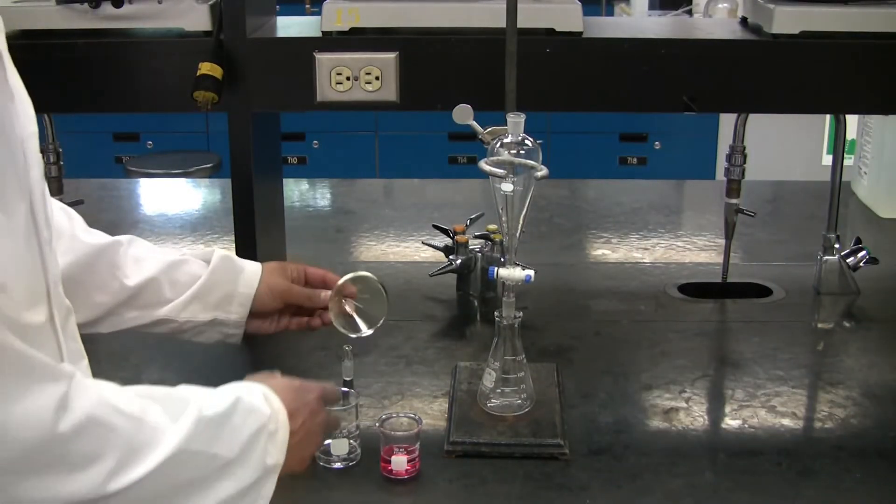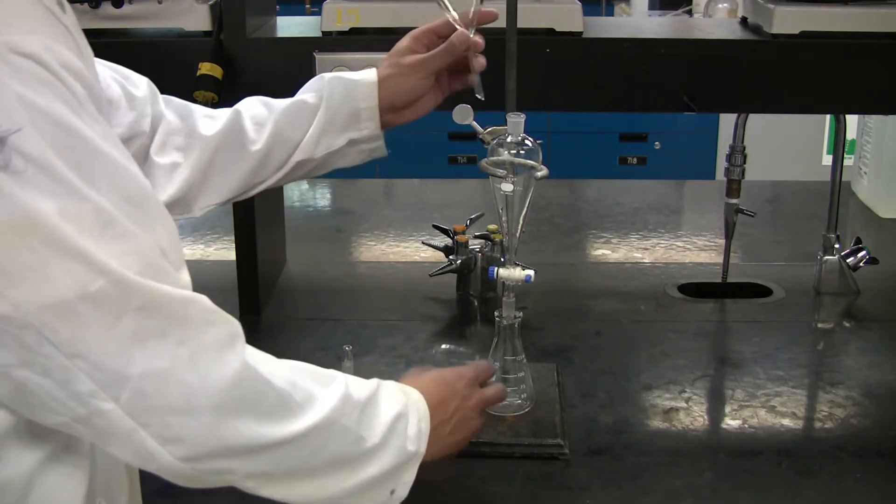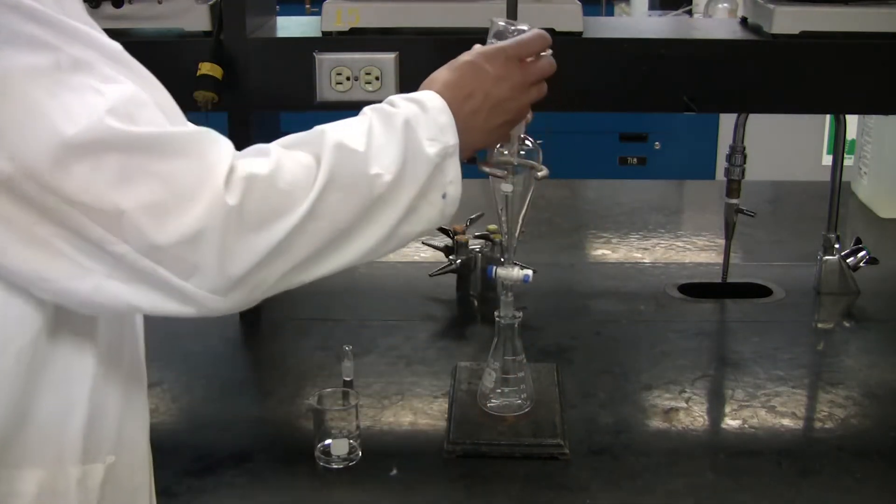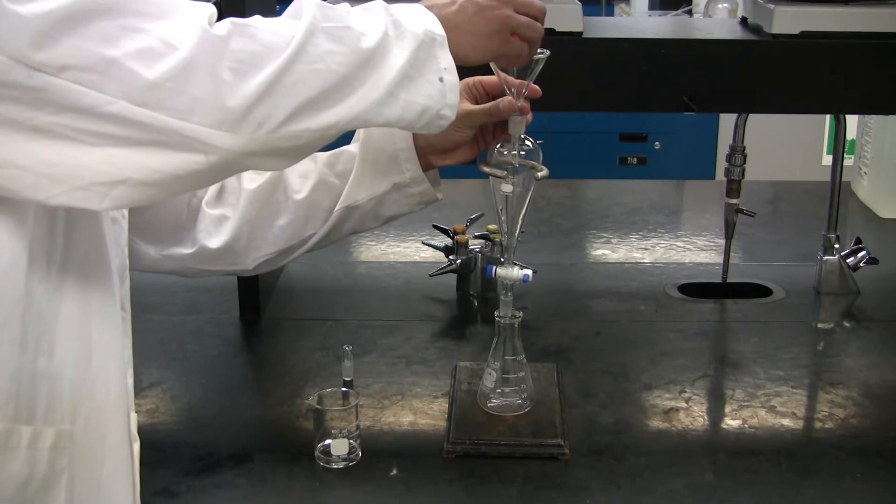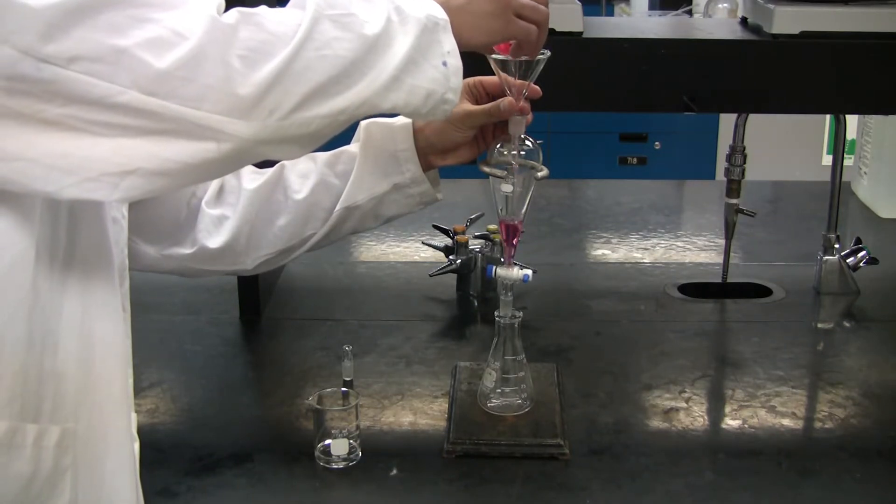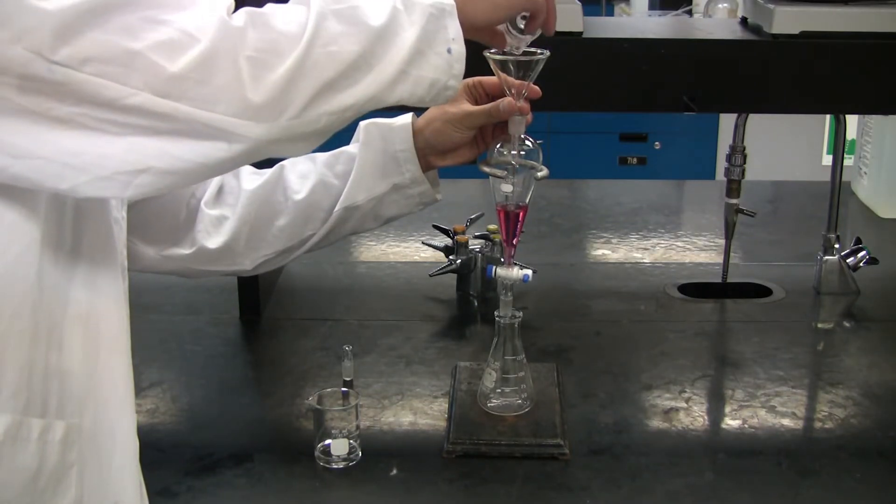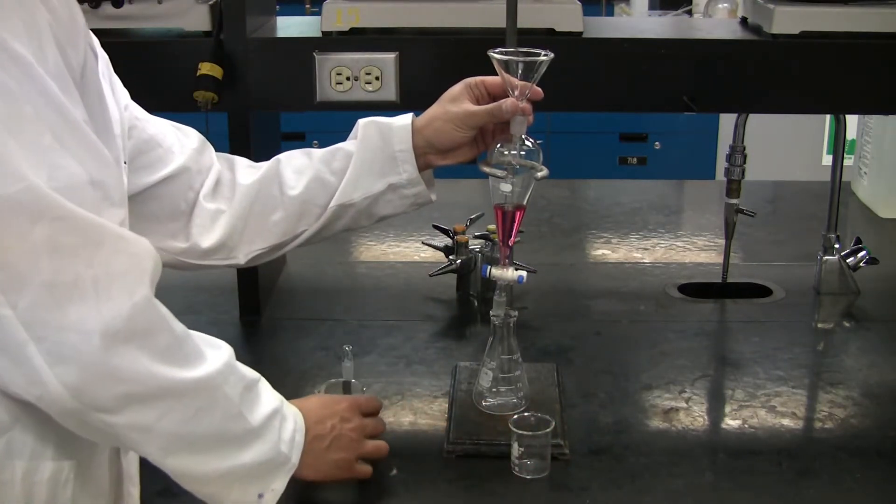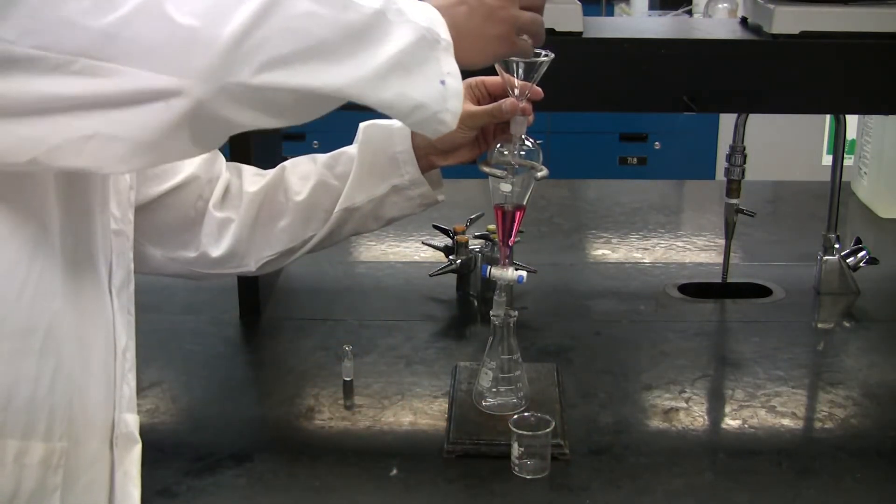Start by adding the glass funnel into the separatory funnel. Add in one of your two layers first, but make sure they are of equal quantity and the stopcock is closed before you start this. Now, add in your solvent.